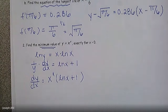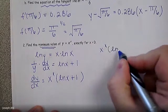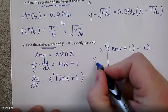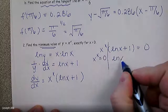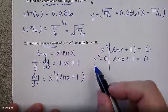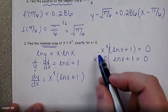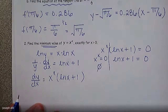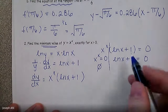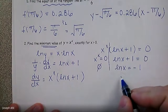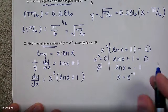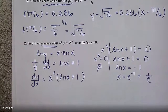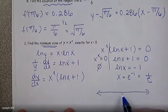The derivative is already in factored form, so we set it to zero. We ask: when does x to the x equal zero, and when does ln x plus one equal zero? Well, you can't raise something to a power and get an output of zero, so that factor has no real solutions. But if ln x equals negative one, then x equals e to the negative one, which is equivalent to one over e. So we partition around x equals one over e on the number line.